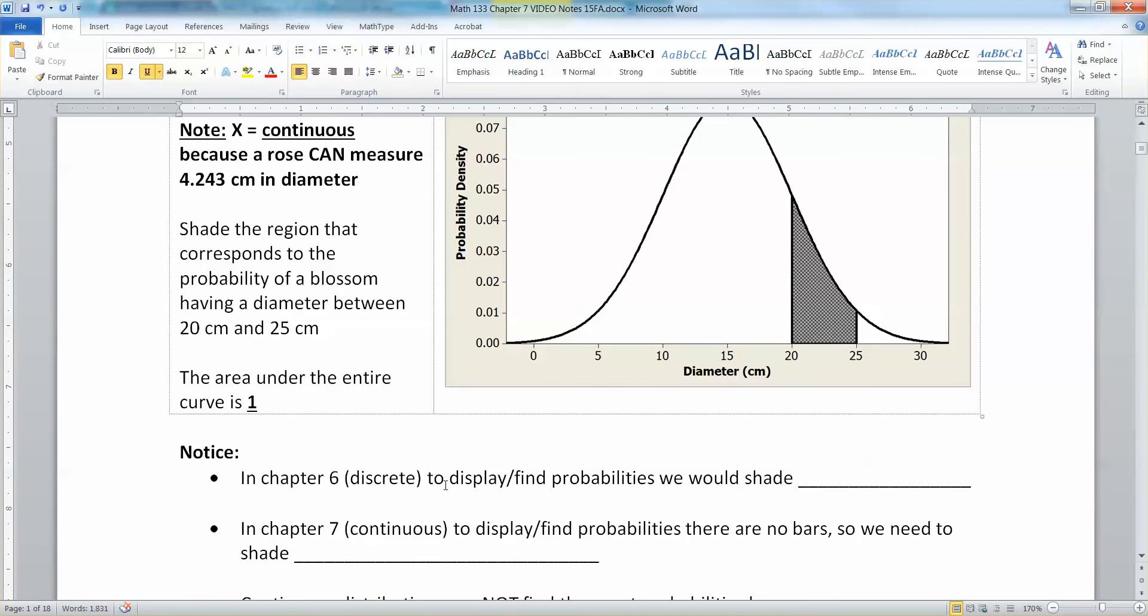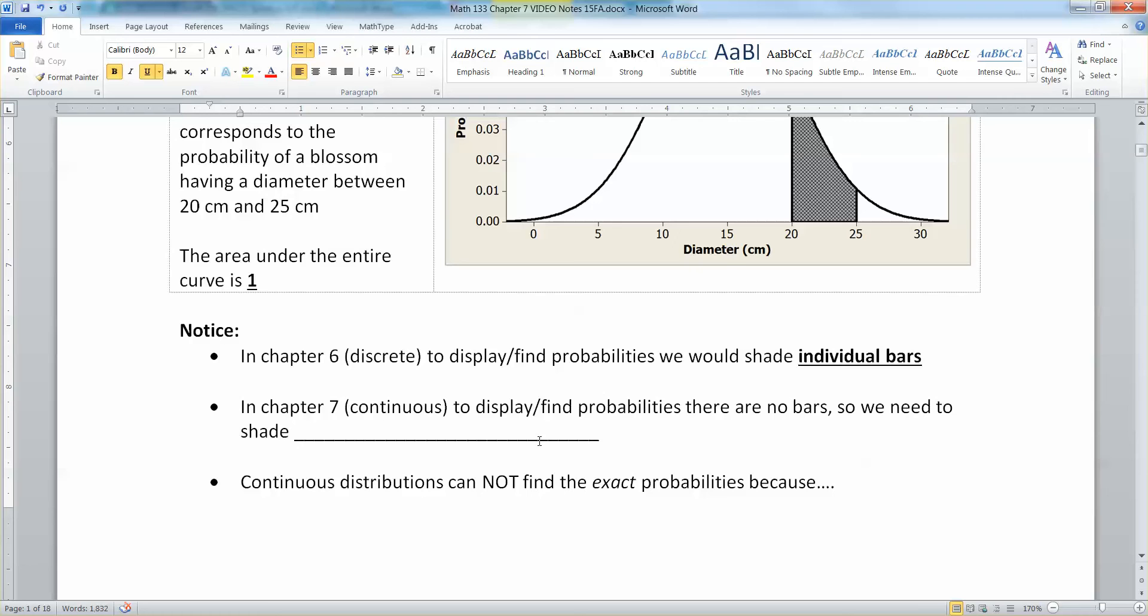Now, in Chapter 6, for discrete displays, to find the probabilities, we would shade individual bars. But in Chapter 7, to display or find probabilities, there aren't any bars. So we need to shade regions under the curve.